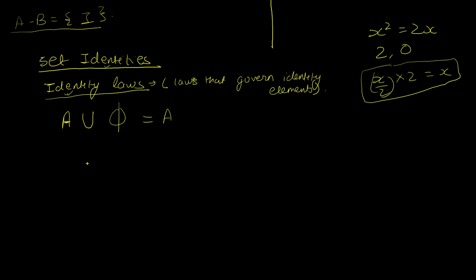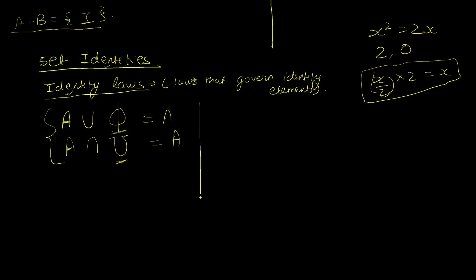The empty set φ is the identity element under union because no matter what set you take the union with, the result is always the same set. The universal set U is the identity element under intersection because all elements of A are in U, so A intersection U equals exactly A. These two are called the identity laws.